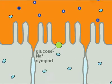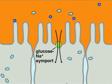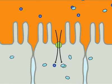To this end, a glucose-sodium symport harvests the energy stored in the sodium gradient to pump glucose into the cell.